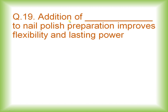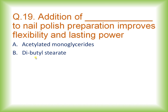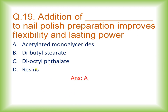Question number nineteen: which addition to nail polish preparation improves flexibility and lasting power? Options are acetylated monoglycerides, dibutyl sebacate, dioctyl phthalate, and resins. The right answer is option A: acetylated monoglycerides are mainly used in nail preparations to improve flexibility and give lasting power to nail paints.